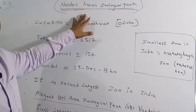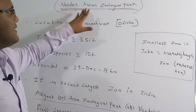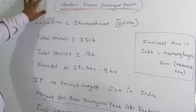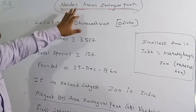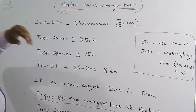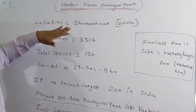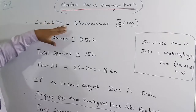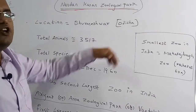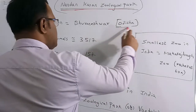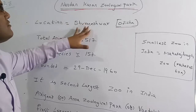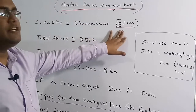Nandan Kanan Zoological Park is the second largest zoo in India. It is located in Bhubaneswar, which is in Odisha. That is why the answer is Odisha — it is present in Bhubaneswar city, in the state of Odisha.